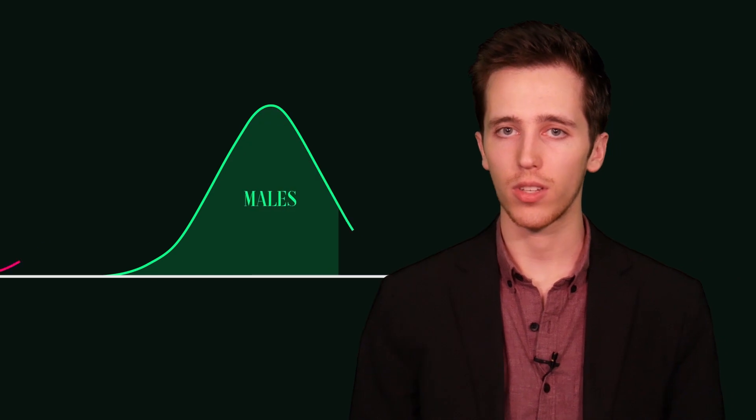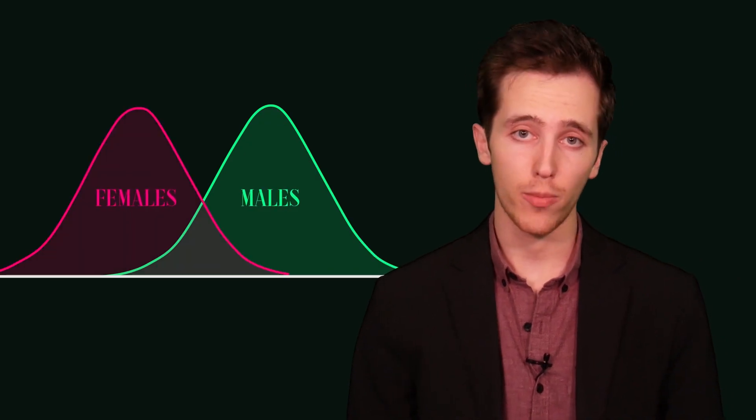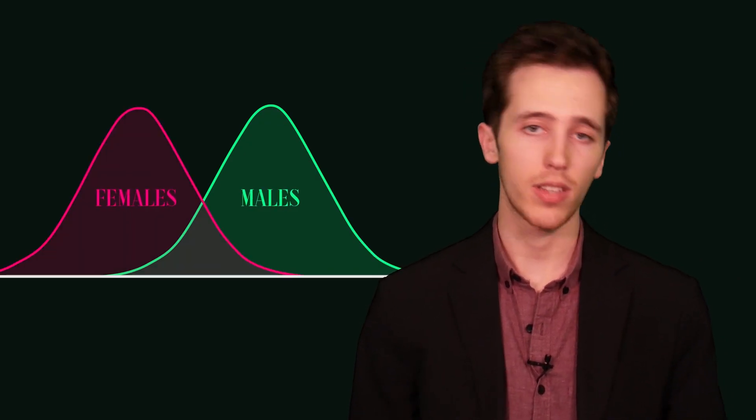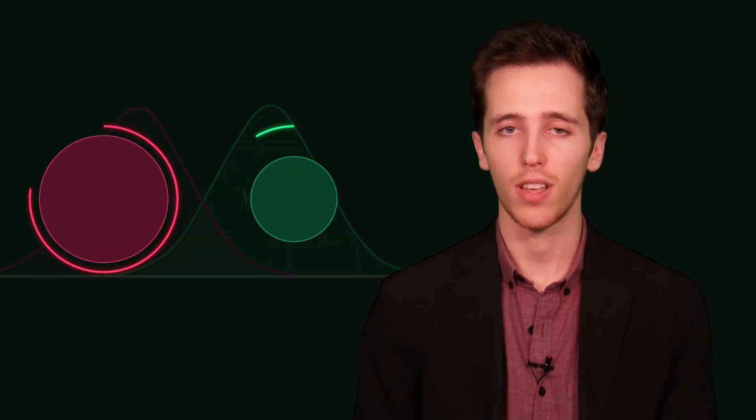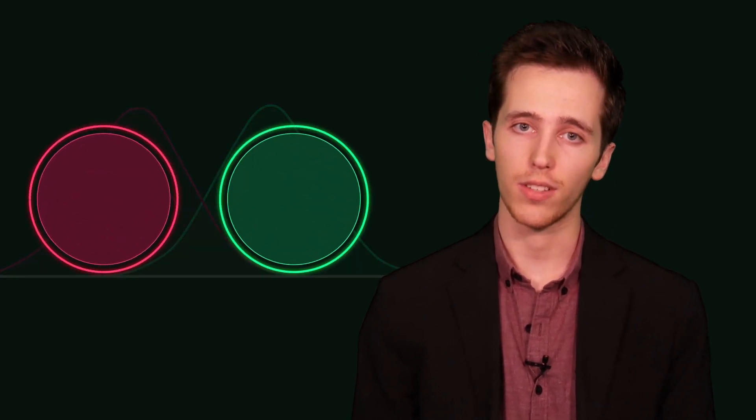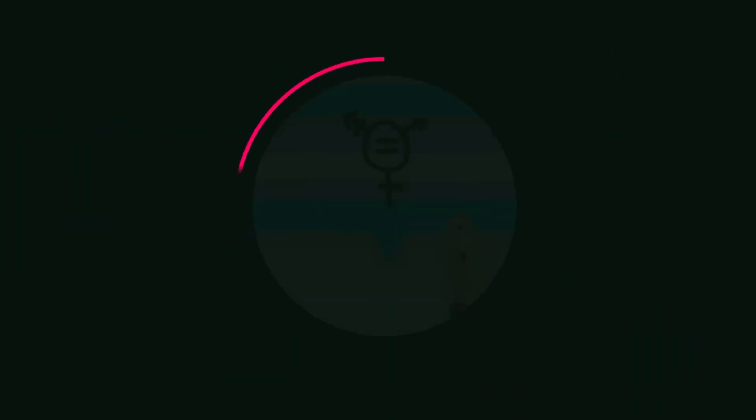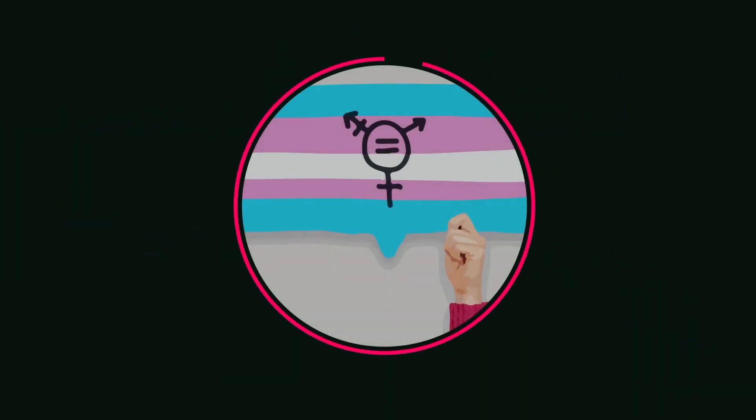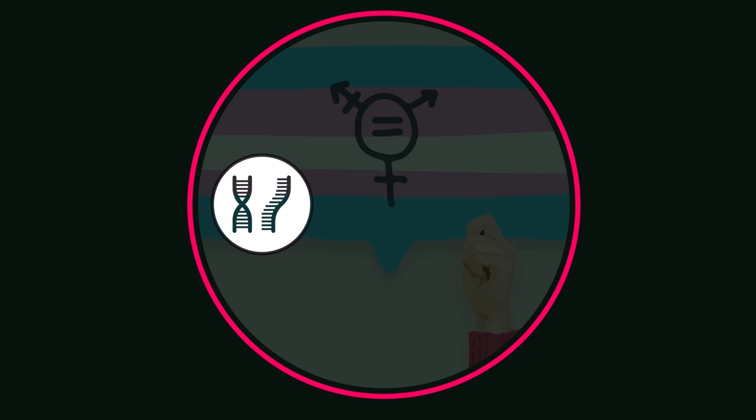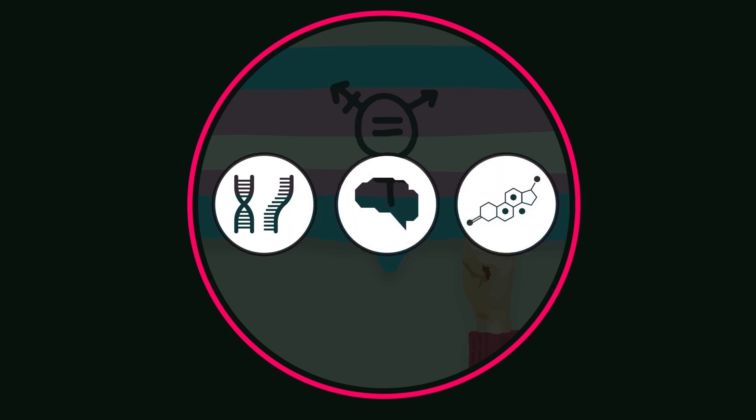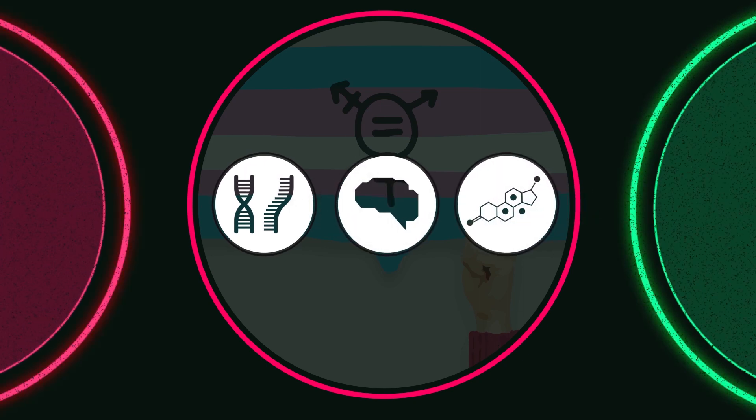The reason why we can place traits such as hormone levels on bimodal distributions is because of the sex binary. Because there are only two gametes of differing size, there are only two sexes. The author presents basic scientific facts about the variation of sex-related traits. Where they go wrong is arguing that variations of genes, brain structure, and hormones proves that male and female cannot be reliably defined.